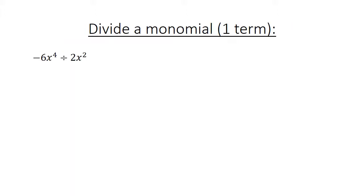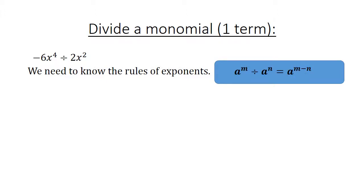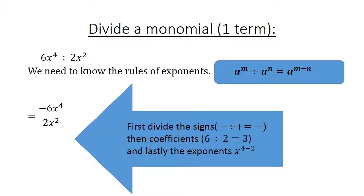Divide a monomial: negative 6x to the power of 4 divided by 2x to the power of 2. We need to know the rules of exponents. First divide the signs — a negative divided by a positive equals negative. Then divide the coefficients: 6 divided by 2 equals 3. Lastly the exponents: x to the power of 4 divided by x to the power of 2 equals x to the power of 4 minus 2. Result: negative 3x to the power of 2.